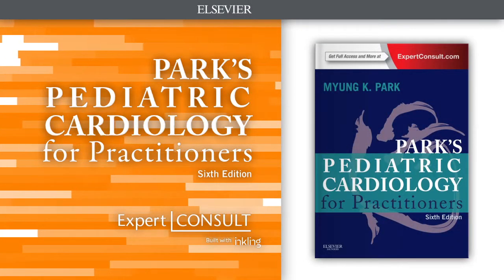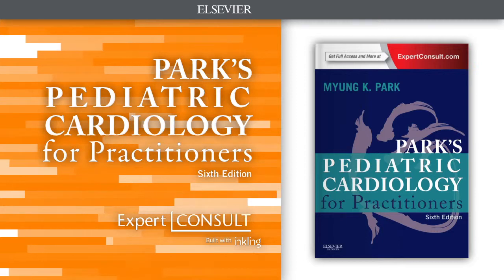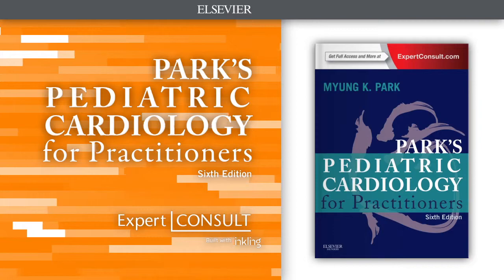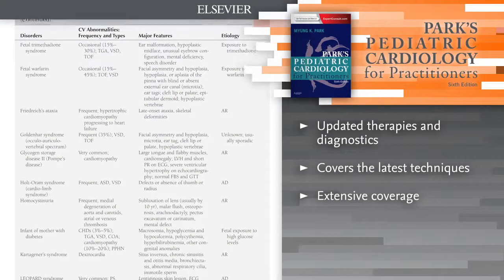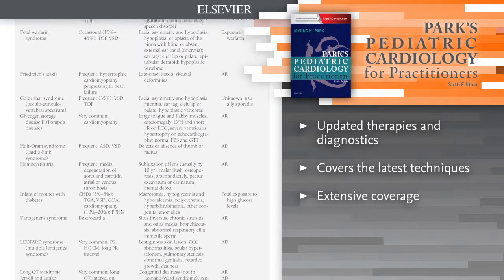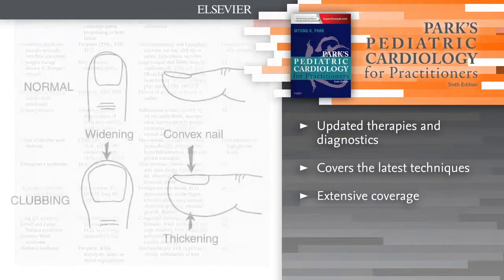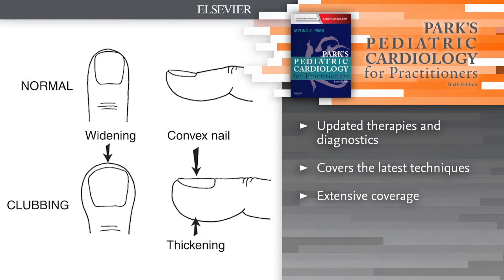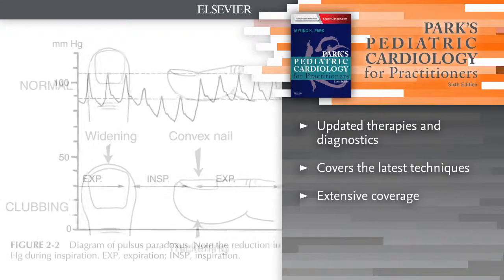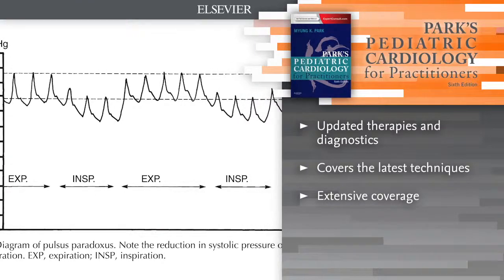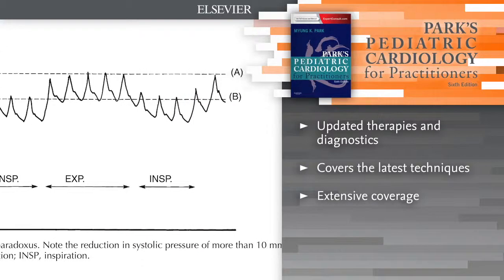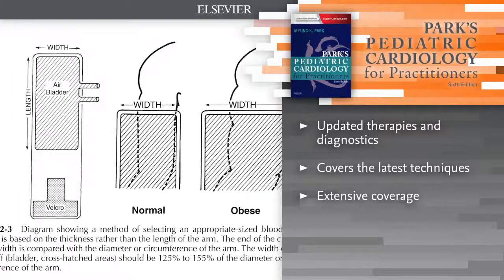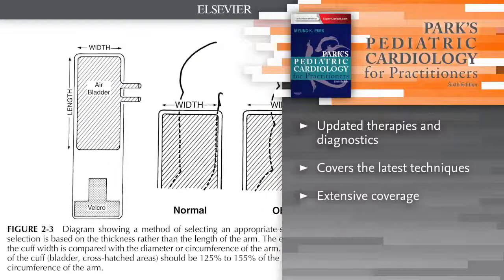Introducing Park's Pediatric Cardiology for Practitioners, 6th edition. Park's Pediatric Cardiology for Practitioners provides the practical guidance you need to diagnose and manage children with congenital and acquired heart disease. From history and physical examination through preventative treatment and the management of special problems, the fully revised 6th edition incorporates all of the latest concepts in cardiology, distilled in a way that is understandable to pediatricians, family practitioners, NPs and PAs alike.